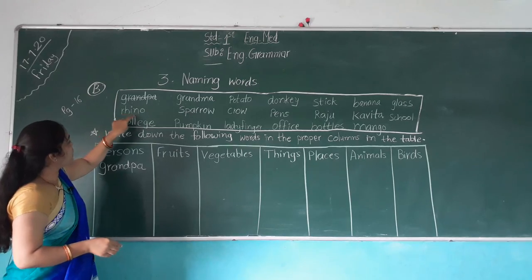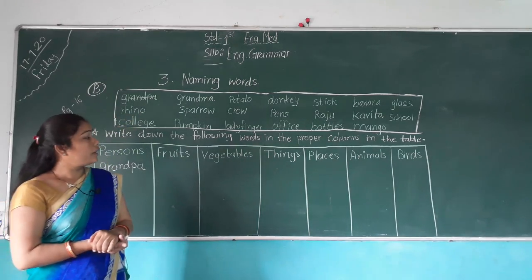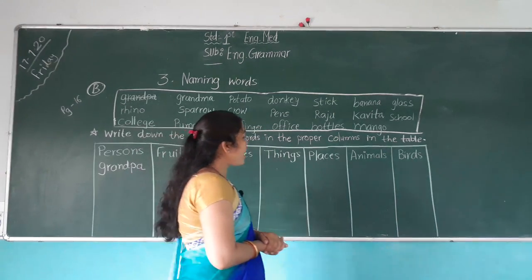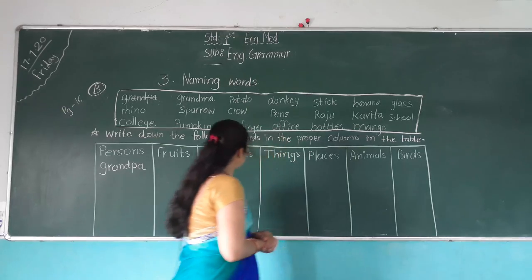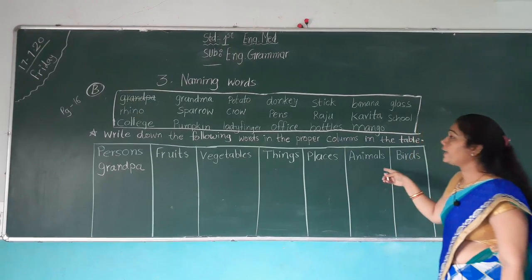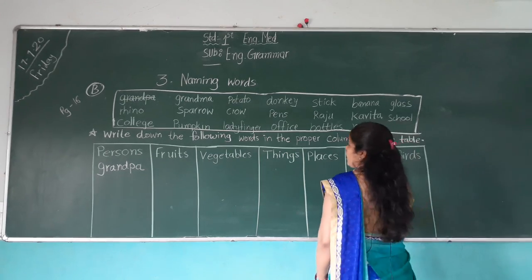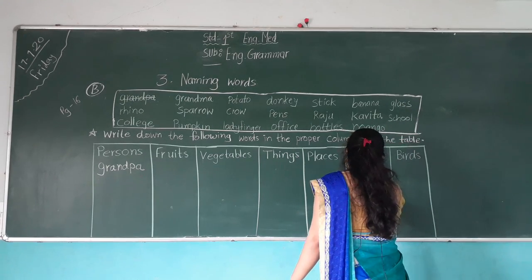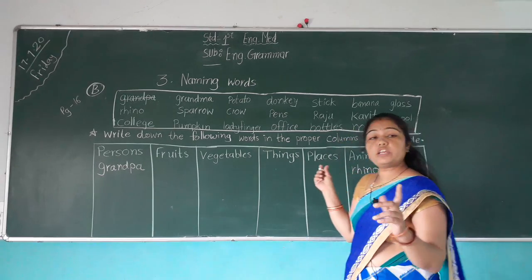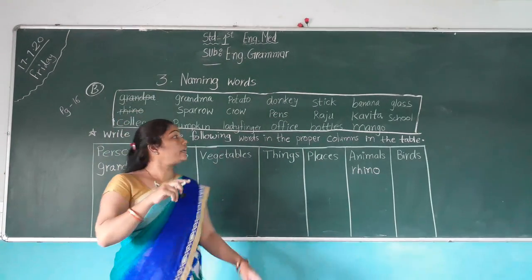Next, R-H-I-N-O — Rhino. Rhino is the name of an animal. So where is the animals column? Rhino is an animal, so we write it in the animals column. And we cut the spelling of rhino so we do not count it again.